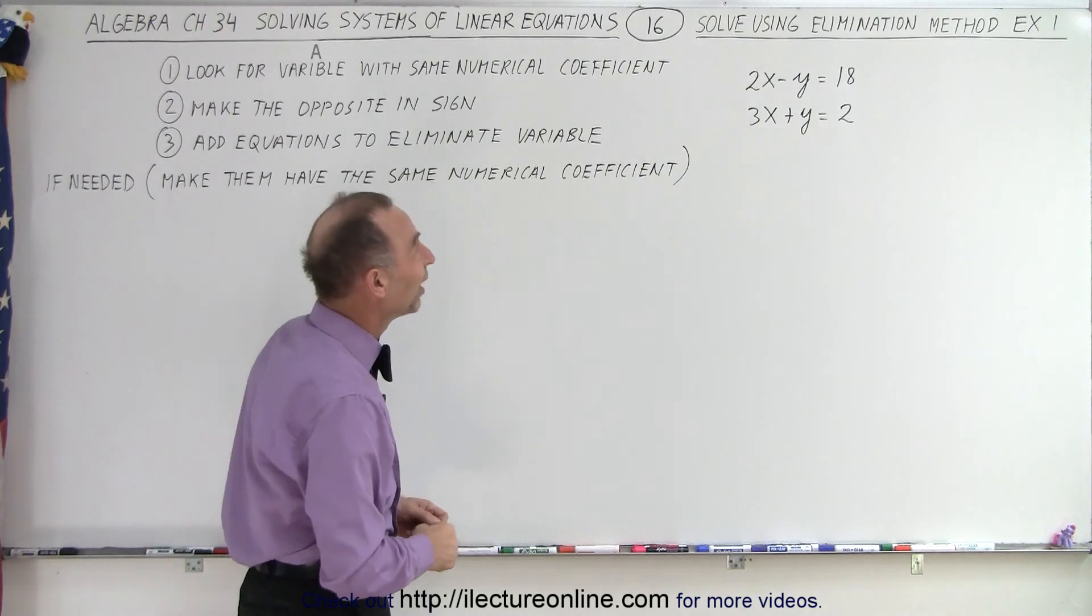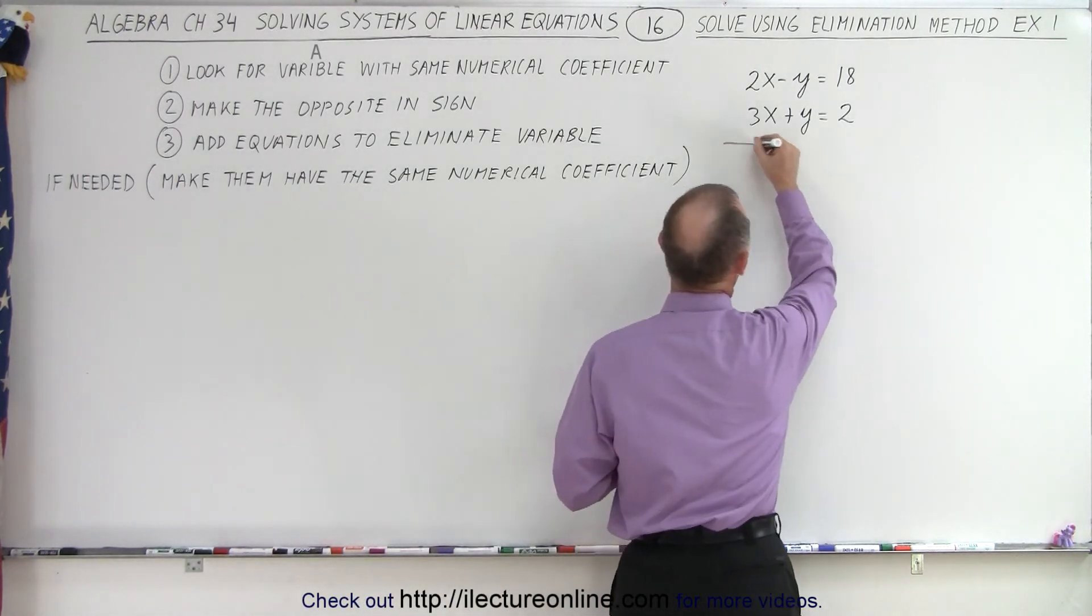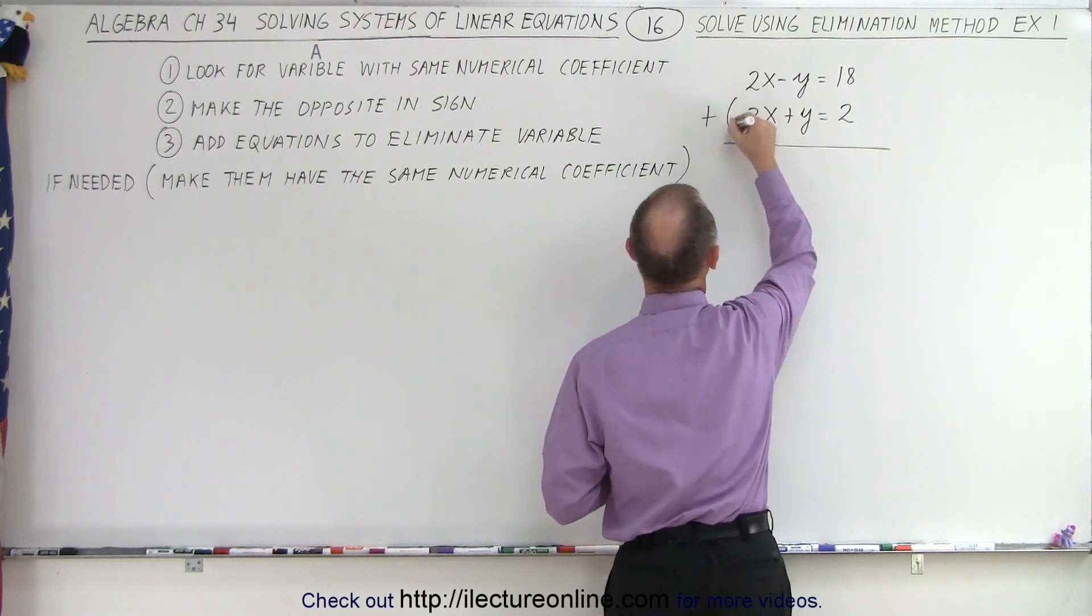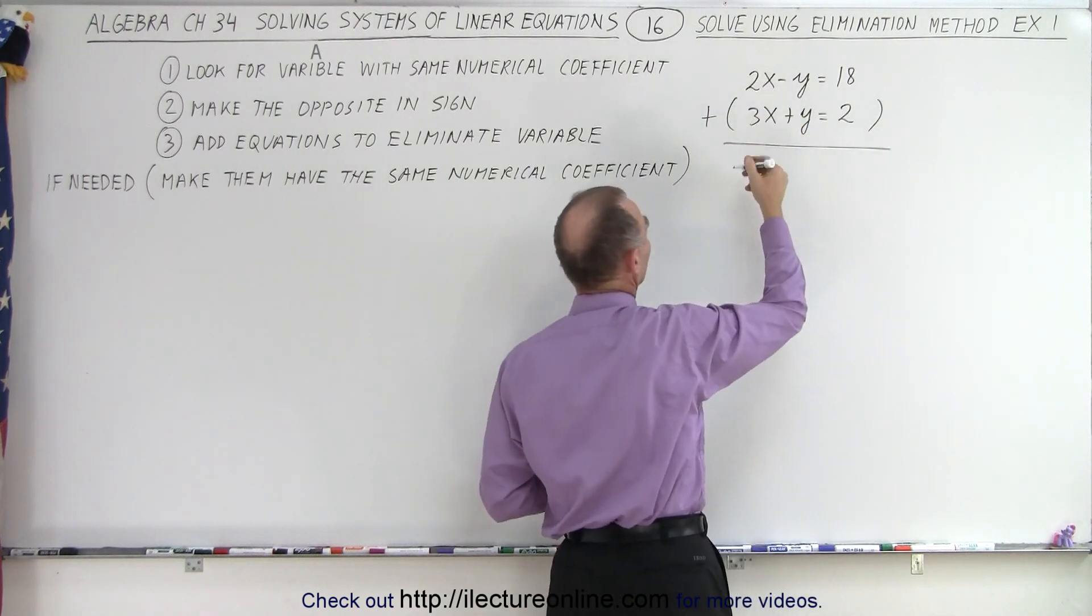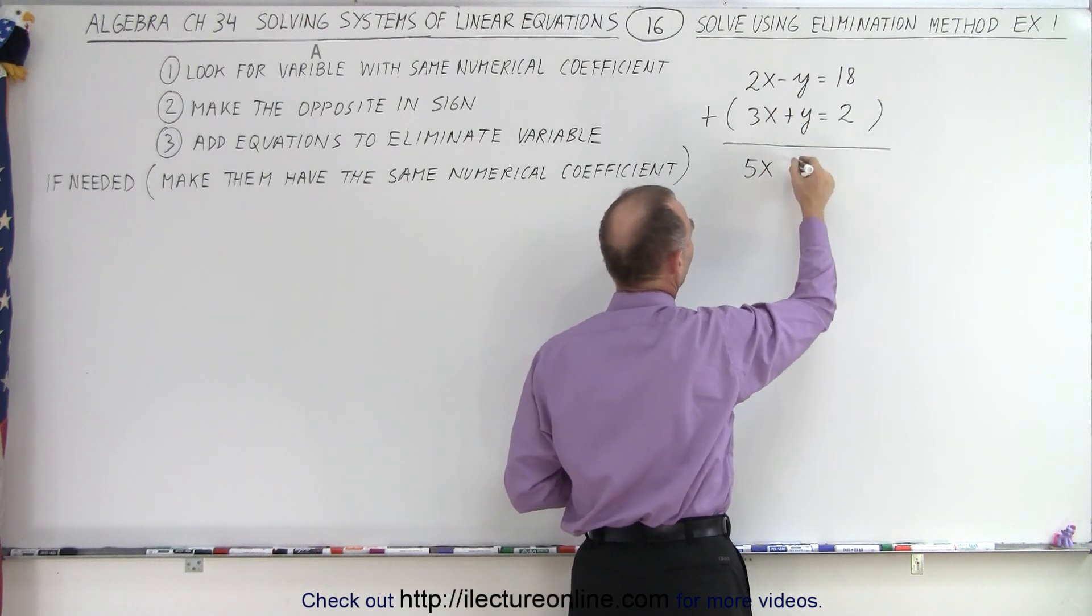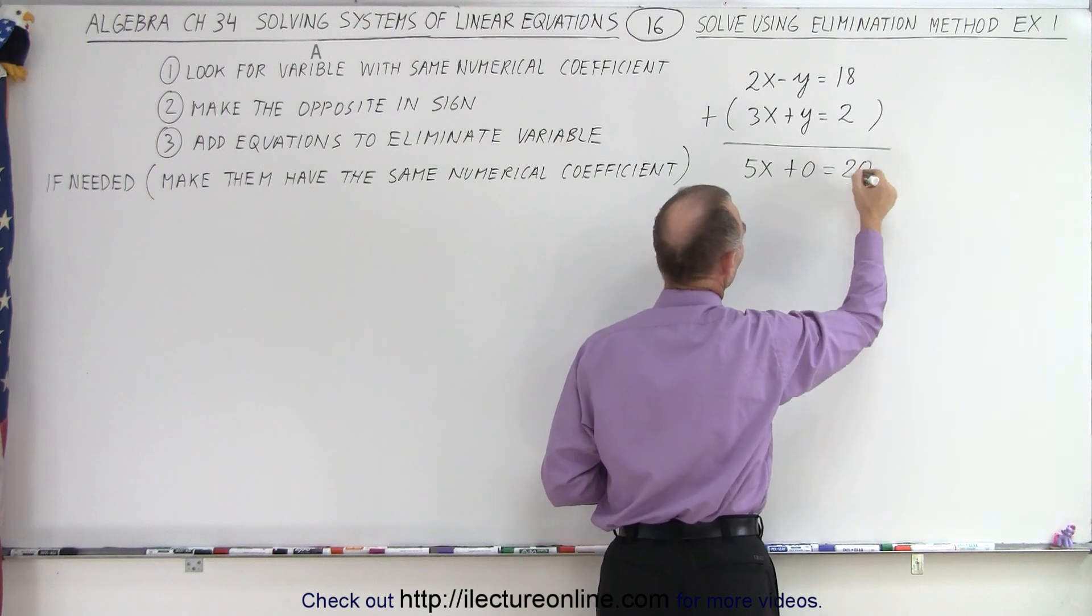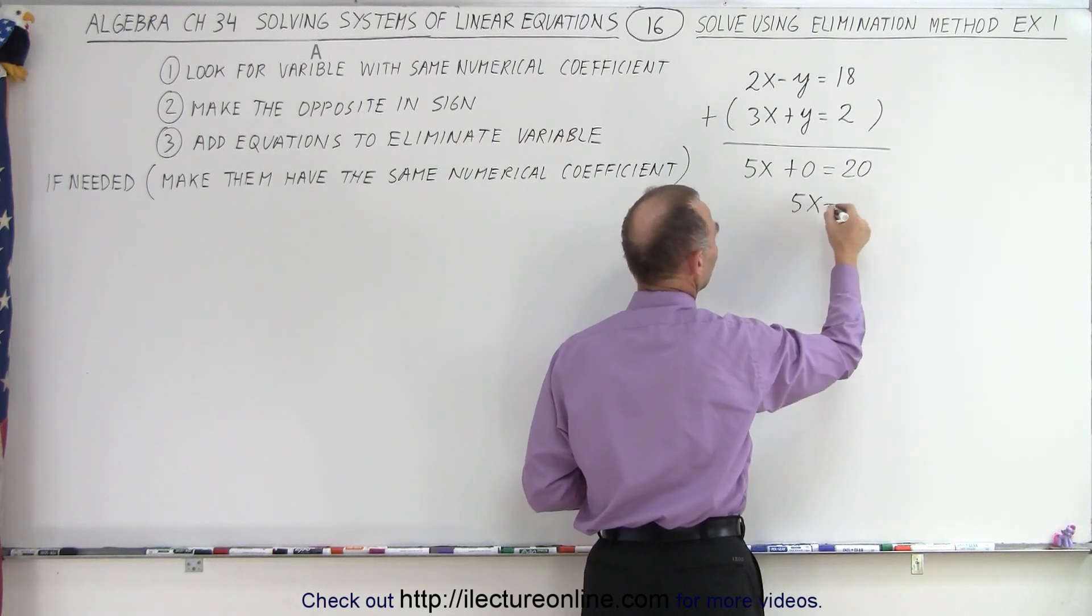Elimination method, method of elimination, in order to solve this particular problem. So what we're going to do now is we're going to add the two equations together. And so here we get 2x plus 3x, which is 5x. Negative y plus y, that is 0, equals 18 plus 2, equals 20. So we end up with 5x equals 20.